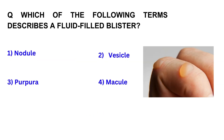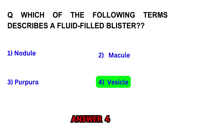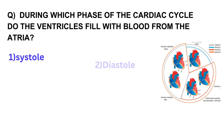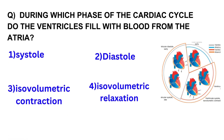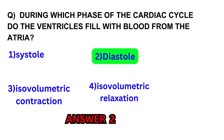Which of the following terms describes a fluid-filled blister? Vesicle. During which phase of the cardiac cycle do the ventricles fill with blood from the atria? Diastole.